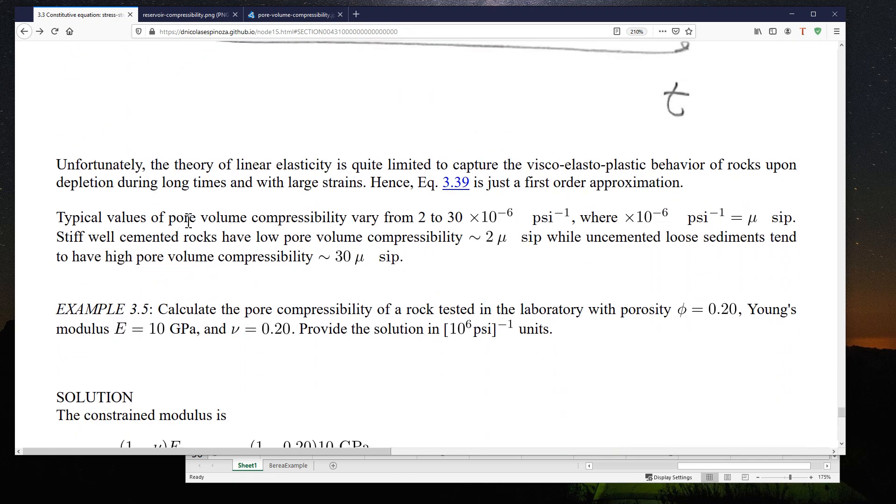Typical values of the pore volume compressibility range from 2 to 30 times 10 to the minus 6 psi inverse and this psi inverse times 10 to the minus 6 usually goes by the name of a micro-sip. The sip is the inverse of a psi. Rocks with a low compressibility usually are in the order of 2 micro-sips and rocks with a high compressibility are in the order of 30 micro-sips. Again, this range is quite broad, so it depends a lot on which kind of rock you are dealing with. That's why many times this is a value that it's strongly advised to be measured.